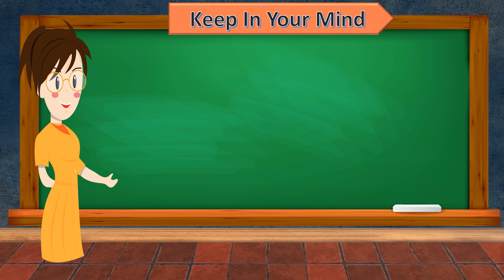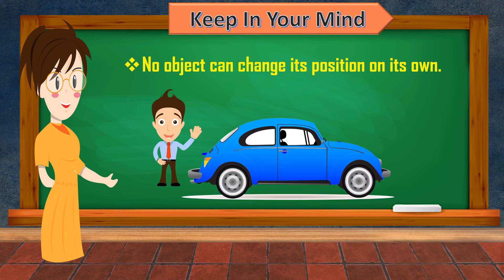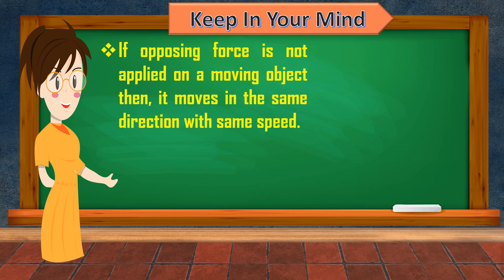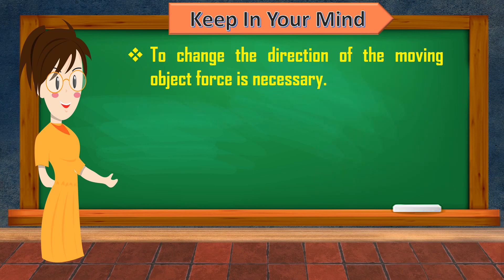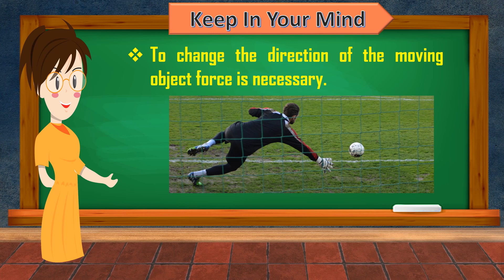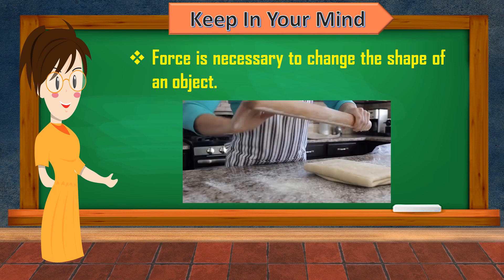Now I am going to tell you some points that you will have to keep in mind. No object can change its position on its own. Suppose a man is standing behind a stationary car — will the car move due to his presence? No, to move the car we need to apply some force. If an opposing force is not applied on a moving object, it moves in the same direction with the same speed. Suppose you are playing on a slide — unless you reach the ground, you will remain in motion. To change the direction of a moving object, force is necessary. While taking a penalty kick in football, the player applies a force on the ball, and the applied force makes the ball move towards the goal area. When the goalkeeper jumps to save the goal, he tries to apply a force on the moving ball, and the force applied by him can stop or deflect the ball. Force is also necessary to change the shape of an object — for example, the force acting on dough when we roll a roti or chapati.